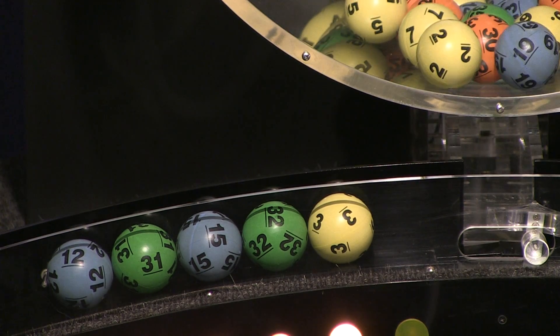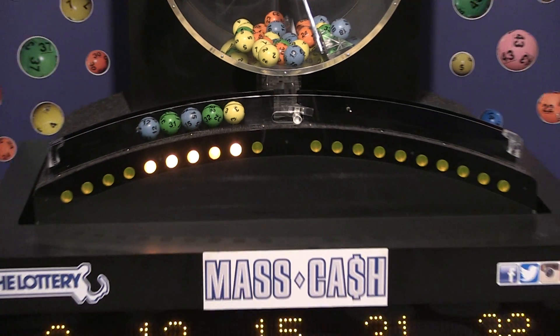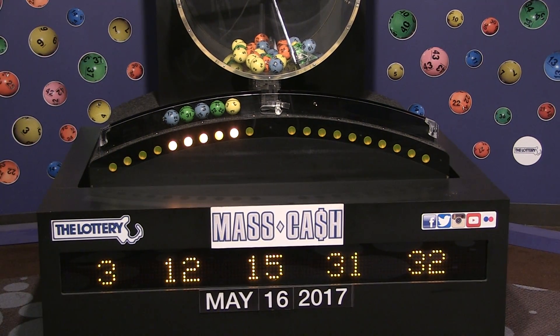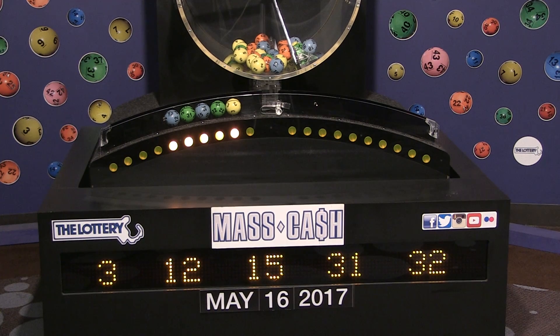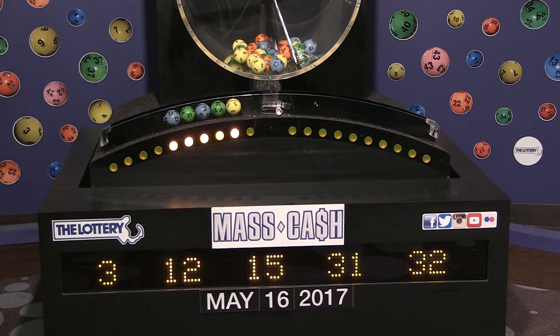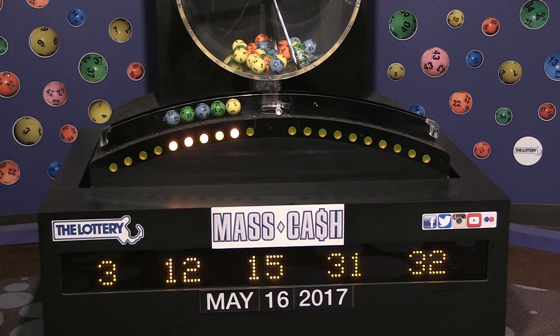is number three. Once again the winning Mass Cash numbers for Tuesday May 16th are 3, 12, 15, 31 and 32. Remember to log on to masslottery.com Facebook and Twitter to watch all of the Mass State Lottery's drawings. Good night.